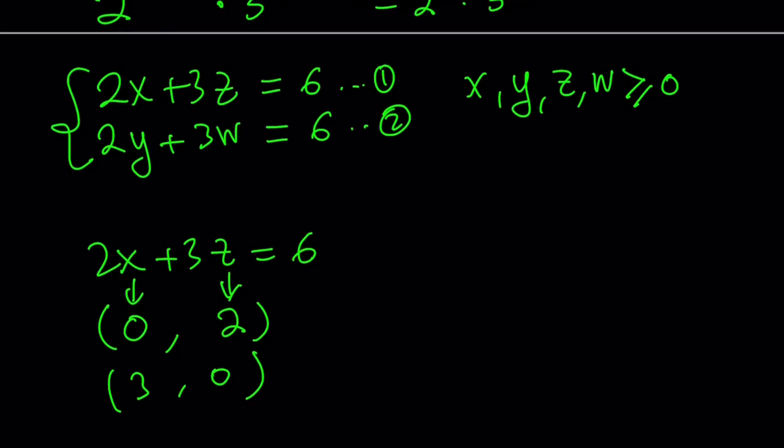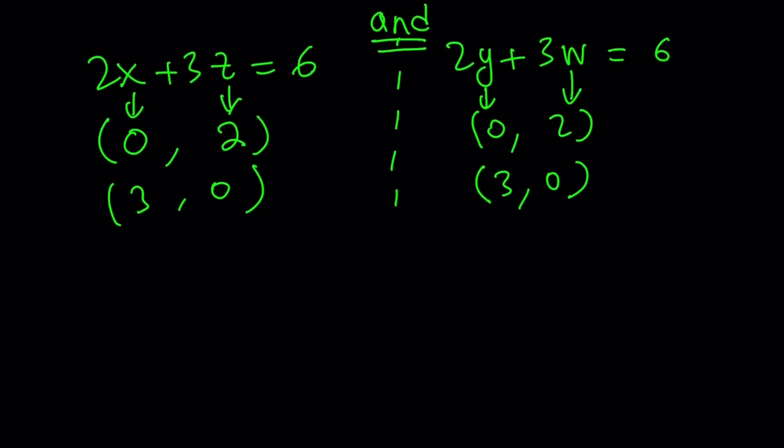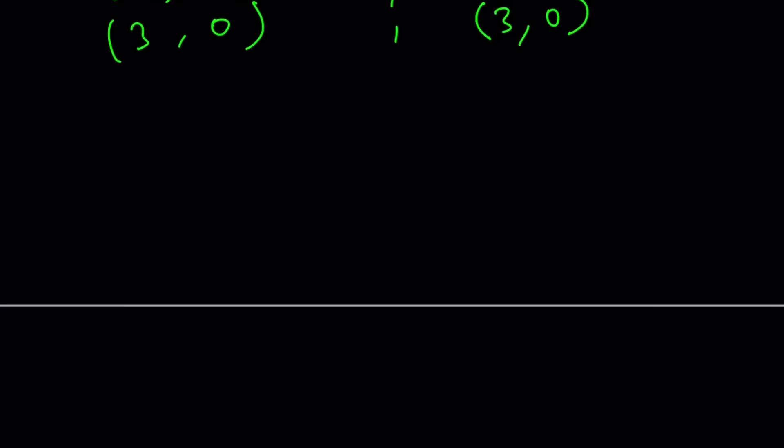What happens with the second equation? Same thing. 2y plus 3w equals 6 gives us 0, 2. 2 is w, by the way, and 3, 0. So we have two ordered pairs for each equation. You know what that means? There's an 'and' in between because they both have to be satisfied. So we're going to do kind of like a combination. We're going to take 0, 2 and 0, 2 and so on. Let's make a table to make it a little easier on ourselves.